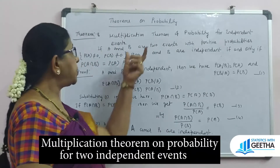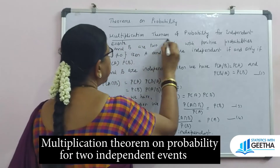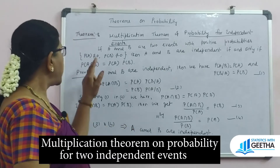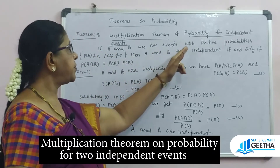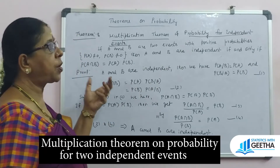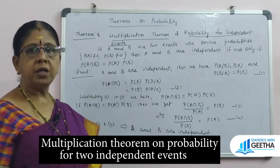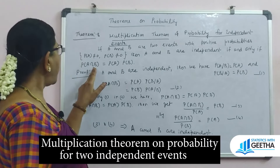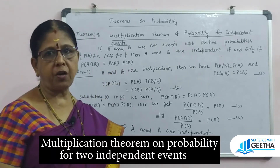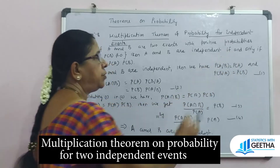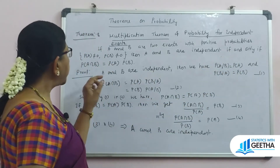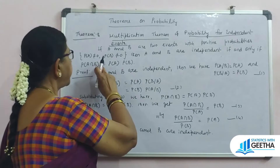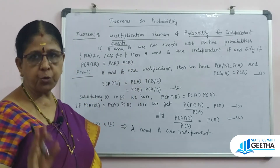The multiplication theorem of probability for independent events — this is an if and only if condition. If A and B are two events with positive probabilities (P(A) ≠ 0 and P(B) ≠ 0), then A and B are independent if and only if P(A intersection B) equals P(A) times P(B). There are two ways to prove: the 'if' condition and the 'only if' condition.